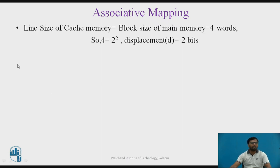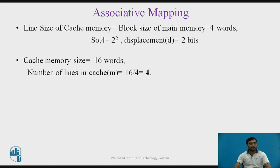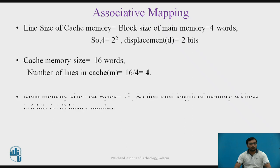For the associative mapping example, the line size of cache memory equals the block size of main memory, which we consider as 4 words. Since 4 = 2², we use 2 bits to identify a particular word (displacement or word address). The cache memory size is 16 words, which divided by 4 gives 4 cache lines. In the previous method, we used an R field to identify those 4 cache lines, but in associative mapping, identifying the cache line using that field is not necessary.